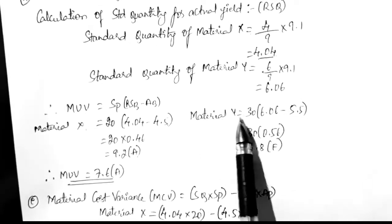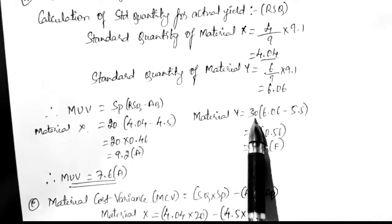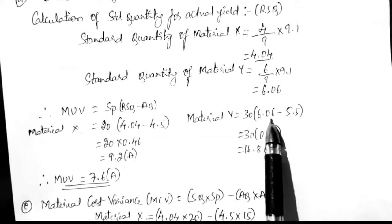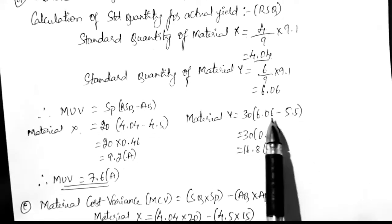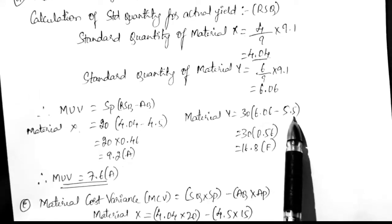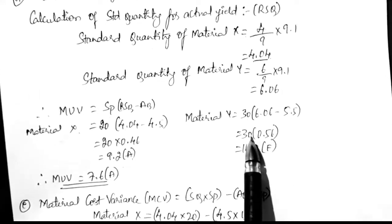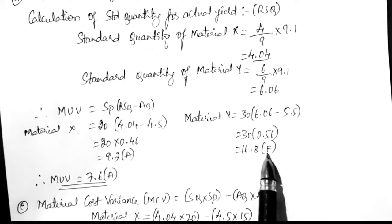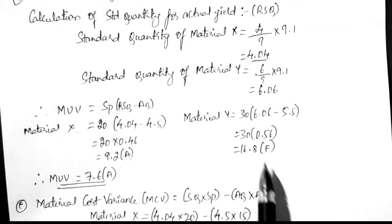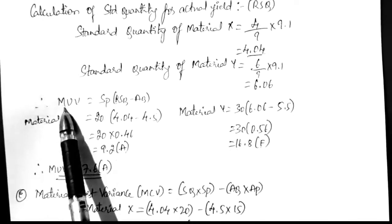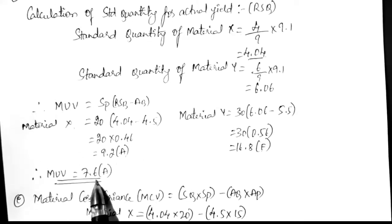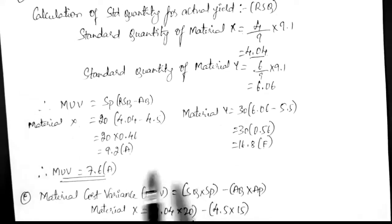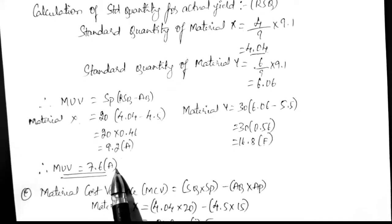For material Y: standard price is 30, RSQ is 6.06, actual quantity is 5.5. So 6.06 − 5.5 = 0.56, multiplied by 30 gives 16.8 favorable. Total material usage variance: 16.8 − 9.2 = 7.6 adverse balance.